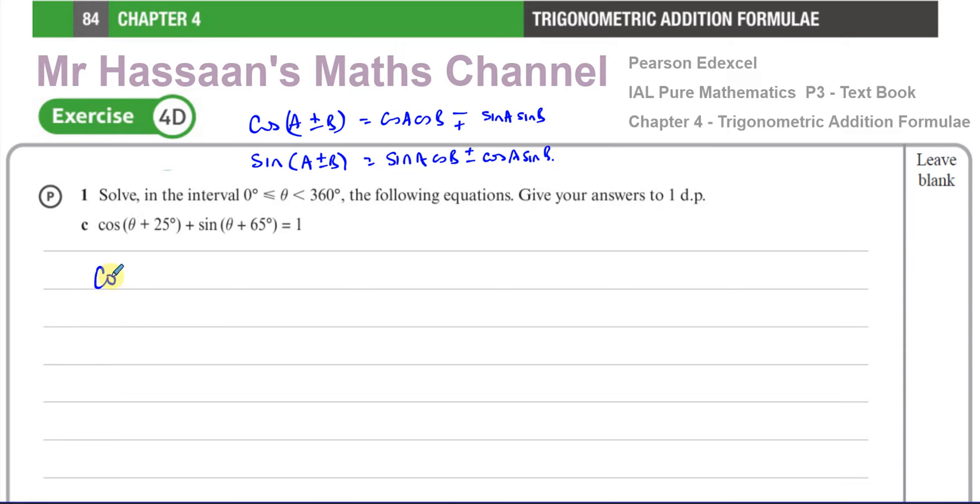This gives you cos(θ)cos(25°) - sin(θ)sin(25°), that's expanding this part. Then you have plus sin(θ)cos(65°) + cos(θ)sin(65°), the other way around, equals 1. So you have to solve this equation.